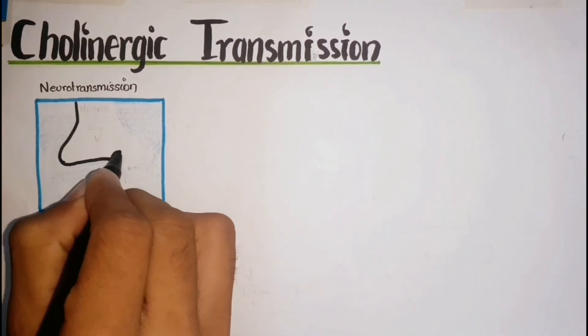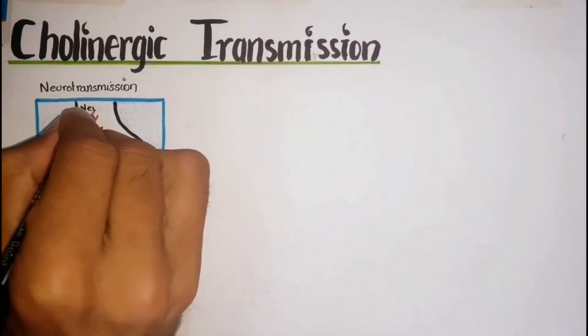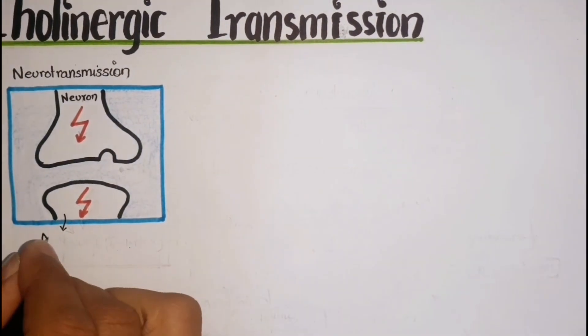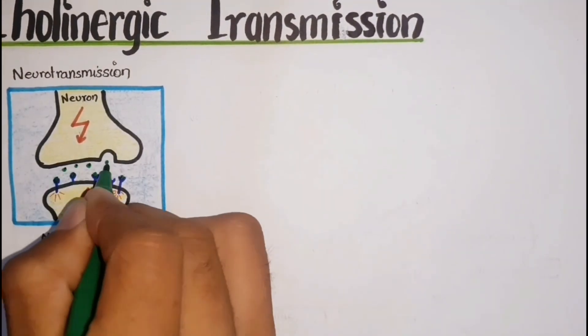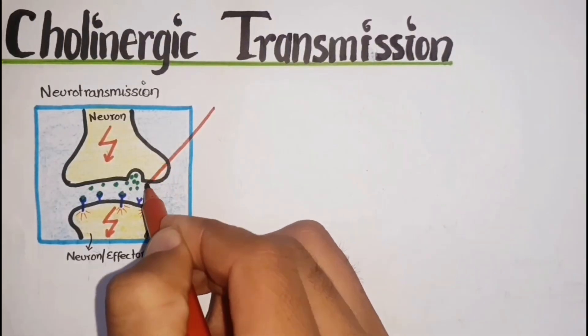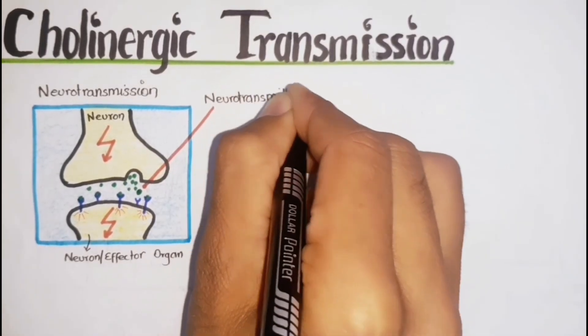Neurotransmission refers to the transmission of nerve impulses from one neuron to another neuron or to an effector organ like muscles or glands by releasing chemical substances called neurotransmitters.